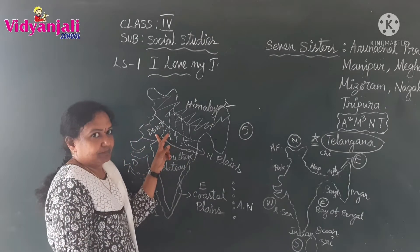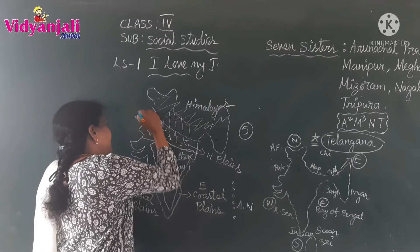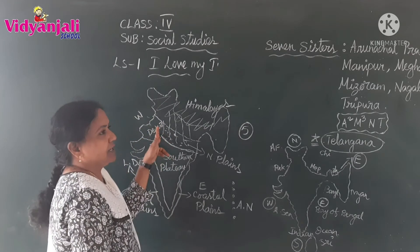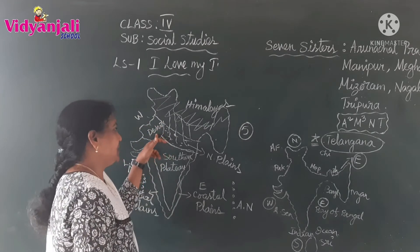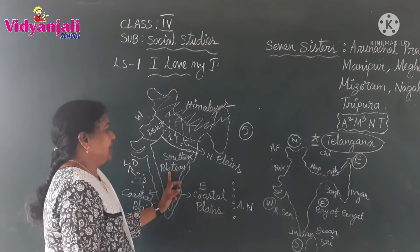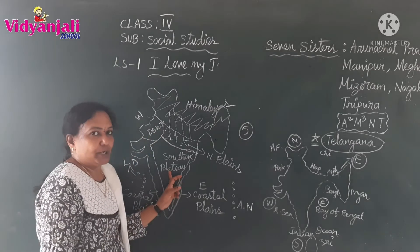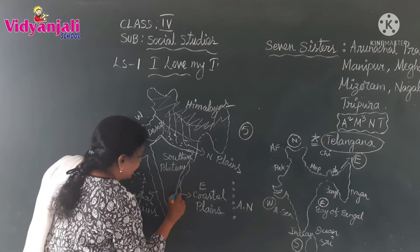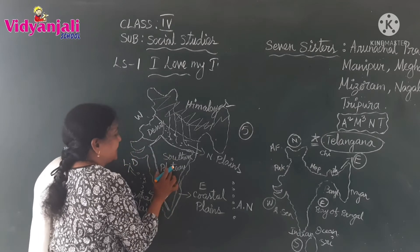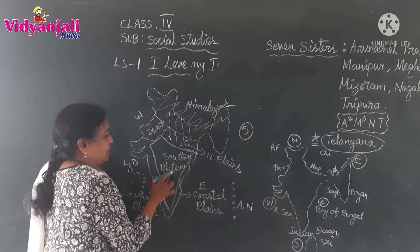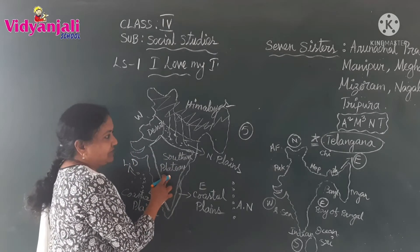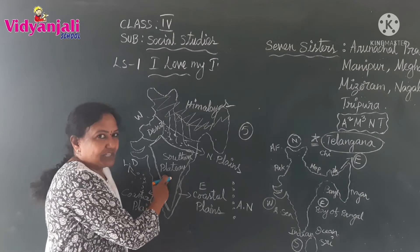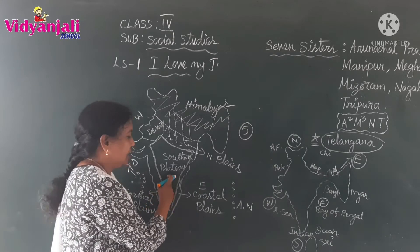Desert — the western desert is located in the western part of our country, so it is called the western desert. Coming to the next one — the Southern plateau. It is a triangular area. This triangular area is the southern plateau, which is one of the physical regions of India. Plateau means mostly a rocky area.